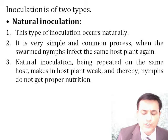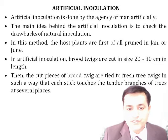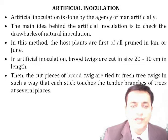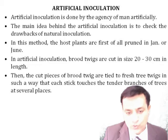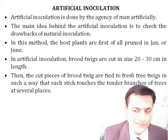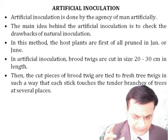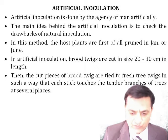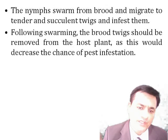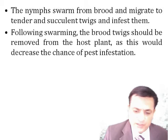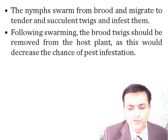Artificial inoculation checks the various limitations of natural inoculation. In this method, host plants are first pruned in their growing season — January or June — and then brood twigs are tied with fresh tree twigs. Nymphs emerge from brood and migrate to the tender and succulent twigs, starting to feed on them with their piercing and sucking mouthparts. After swarming, the brood twigs are removed from the host plants.